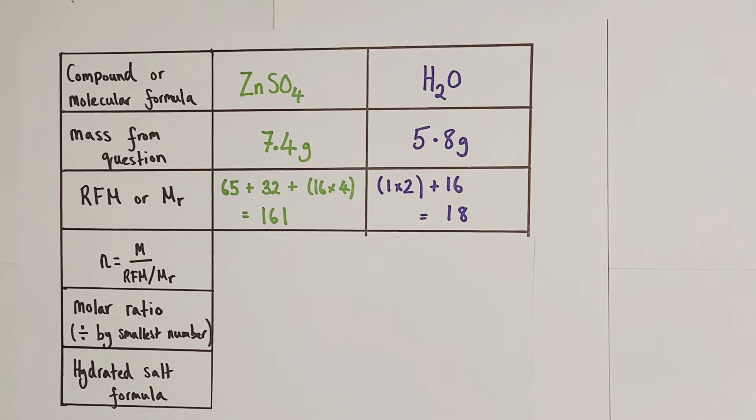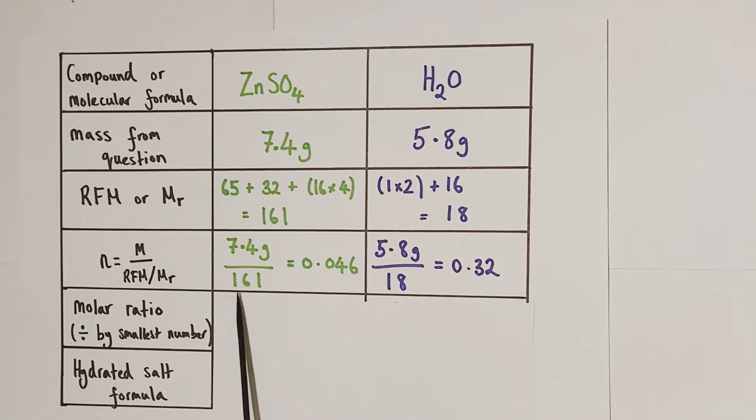So all we're going to do is write down the masses from the question and divide them by the relative masses we've just determined to find out how many moles of zinc sulfate and how many moles of water are present. 7.4 grams divided by 161 gives us 0.046 moles of zinc sulfate present in our hydrated salt.